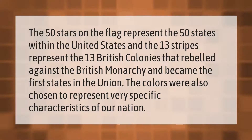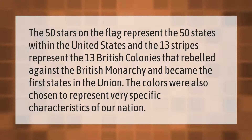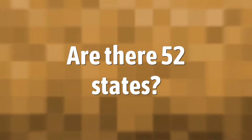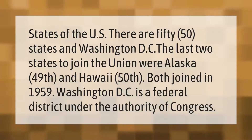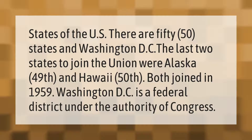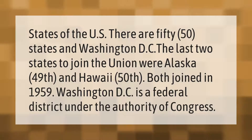The colors were also chosen to represent very specific characteristics of our nation. There are 50 states and Washington DC. The last two states to join the union were Alaska, the 49th, and Hawaii, the 50th — both joined in 1959. Washington DC is a federal district under the authority of Congress.